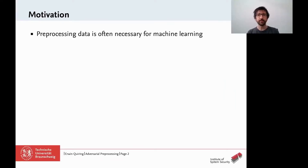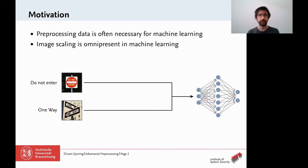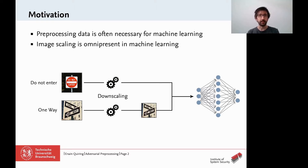If we consider a typical machine learning pipeline, we usually need to preprocess data. In computer vision, we cannot pass an image directly to a learning method such as a neural network, as learning methods typically expect fixed-size inputs that are relatively small — for example, around 300 pixels in each dimension for the state-of-the-art model Inception v3. So we need to scale images, and normally we would expect that the downscaled image corresponds to the input image, like for the one-way sign shown here.